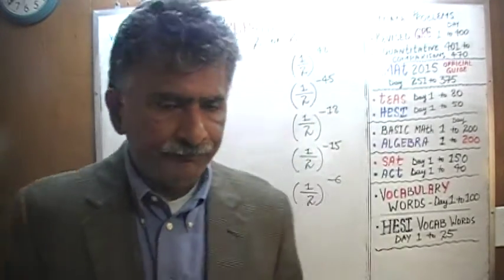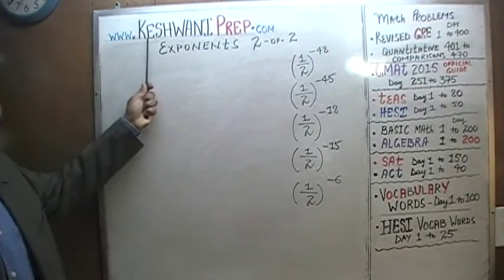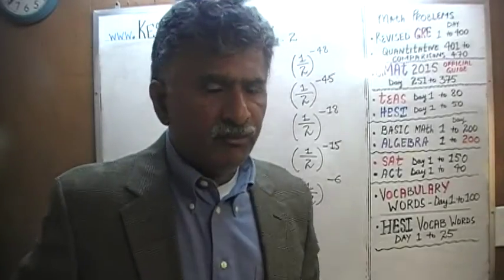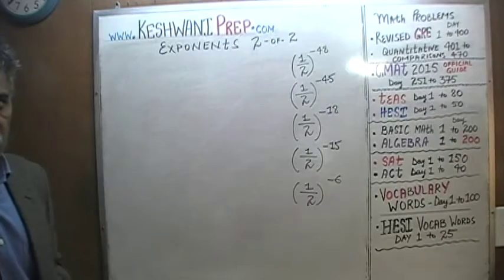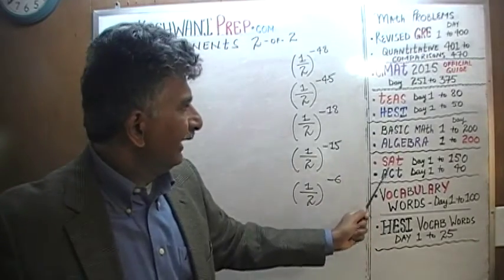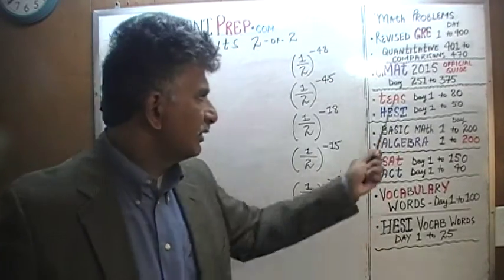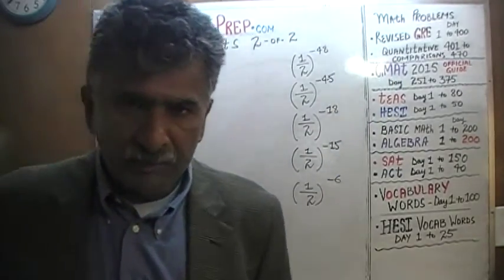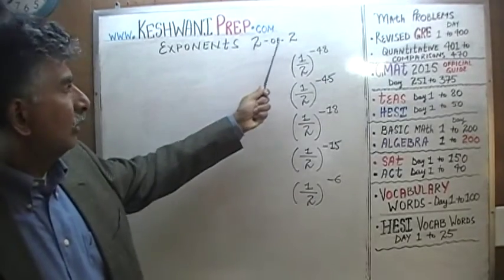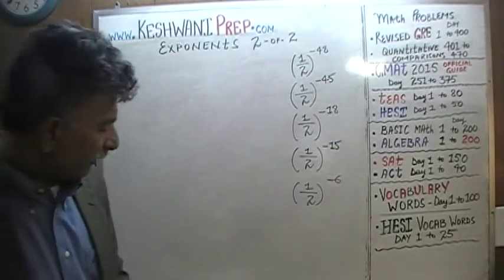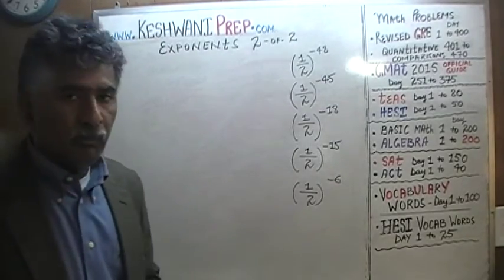Hello, my name is Keshwani — K-E-S-H-W-A-N-I. In this video we'll do four problems dealing with the notion of exponents, the sort of problems you're likely to encounter on the GRE, GMAT, or SAT. We did problems one through six in the first part of this series; this is part two of two. Just look for 'exponents one of two' and you'll see the first six problems from the last video.